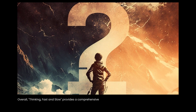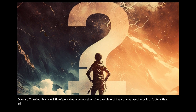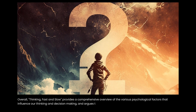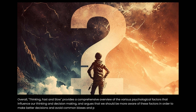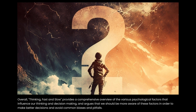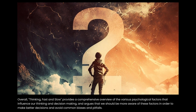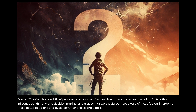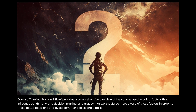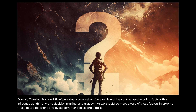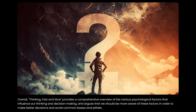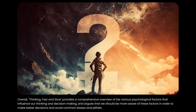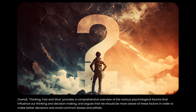Overall, Thinking, Fast and Slow provides a comprehensive overview of the various psychological factors that influence our thinking and decision-making, and argues that we should be more aware of these factors in order to make better decisions and avoid common biases and pitfalls.